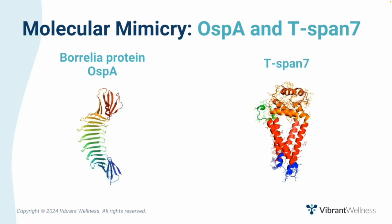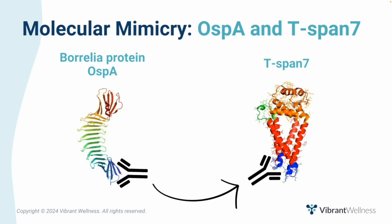Let's take a look at the Lyme arthritis marker, T-SPAN-7. T-SPAN-7 is a newly identified glycoprotein that shares sequence similarity to the Borrelia protein OSPA. Antibodies against OSPA may remain in Lyme disease patients long after antibiotic treatment. This may result in cross-reactivity between these antibodies and T-SPAN-7, resulting in Lyme arthritis.